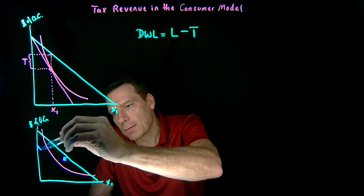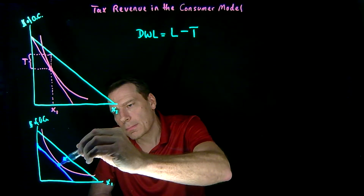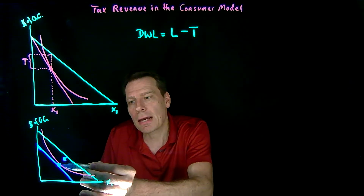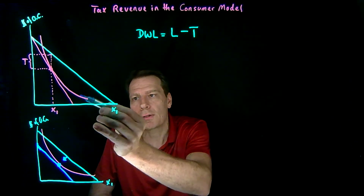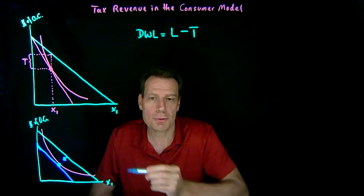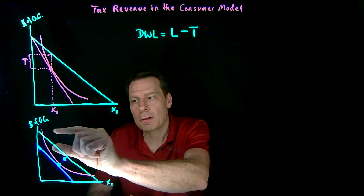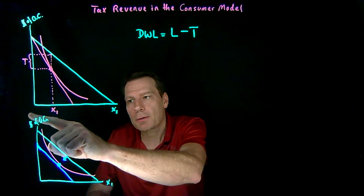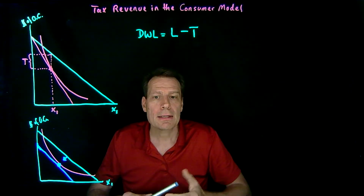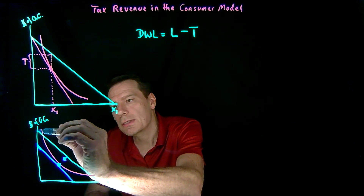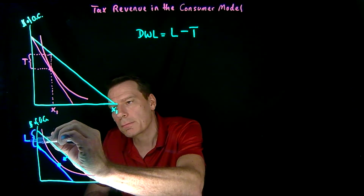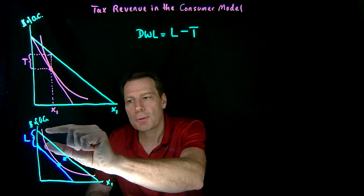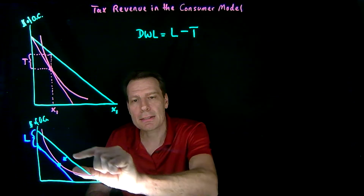Once we reach a point of tangency, we've reached the most we could possibly take from you in cash — if we took any more, we'd make you worse off than you were on the magenta budget under the distortionary tax. So now we have two parallel budgets. The vertical difference between them — which we can measure in dollars since dollars are on the vertical axis — is how much cash was taken away. That difference is L, and since the two budgets are parallel, that distance is the same everywhere.